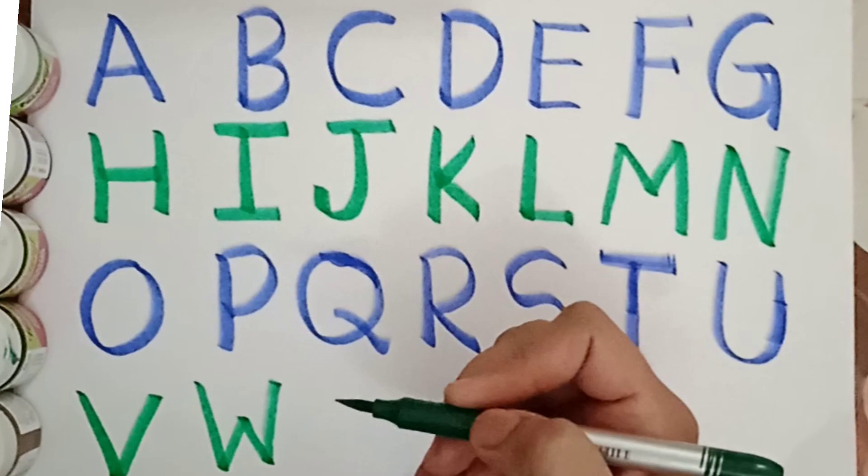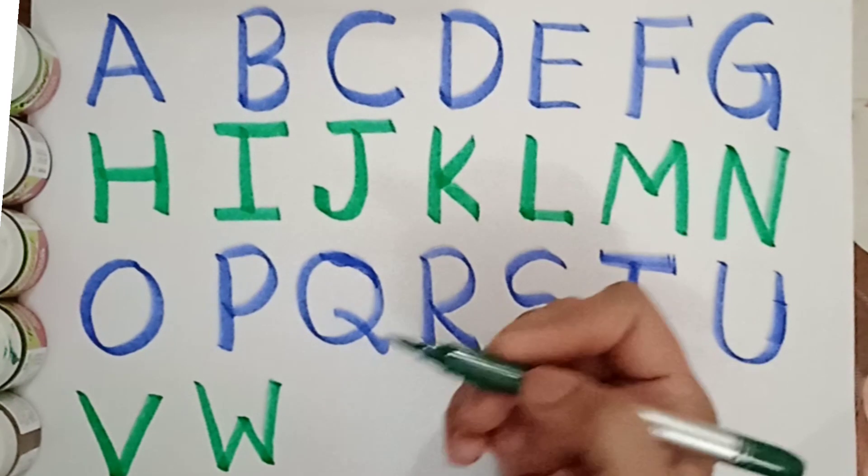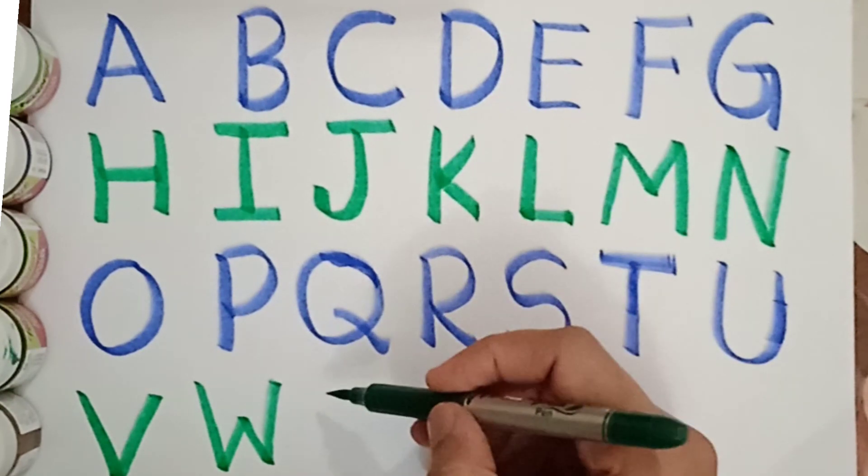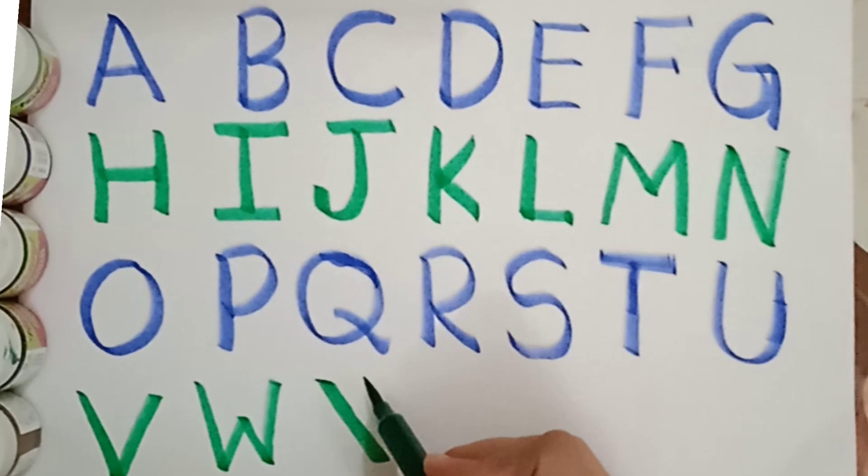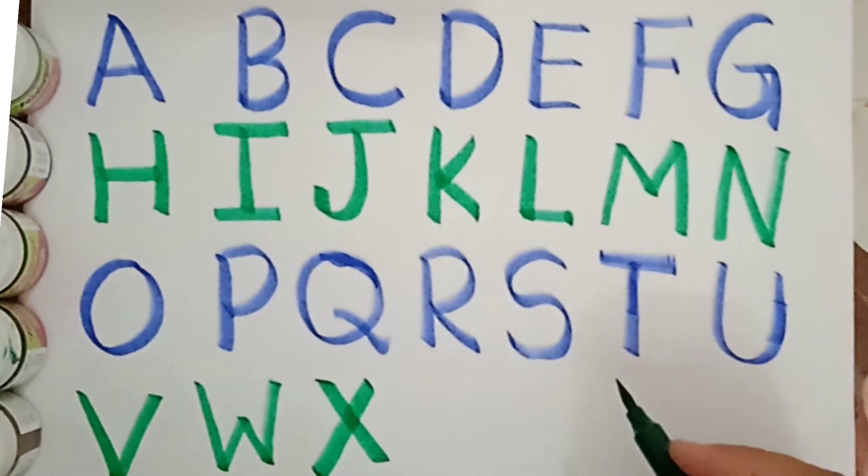W is for watch. W is for watch. And next letter is X. X is for x-ray. X is for x-ray.